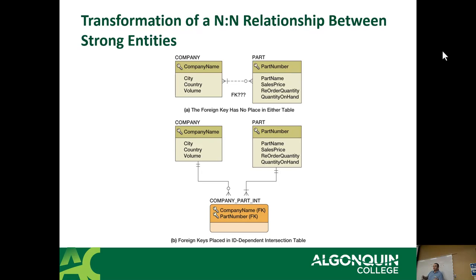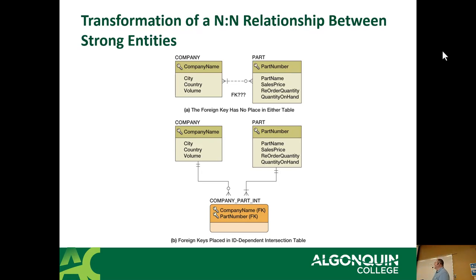The intersection table inherits the primary key of both parents, and both foreign keys are also part of the primary key — it's a compound key that's also foreign keys. This allows you to say each company can have each part once. For example, Home Depot and Lowe's can both sell the same screw, but Home Depot can't have that screw twice in their system. This is known as an ID-dependent intersection table, also known as an associative entity — though the terms get used interchangeably even though they're not quite the same thing.